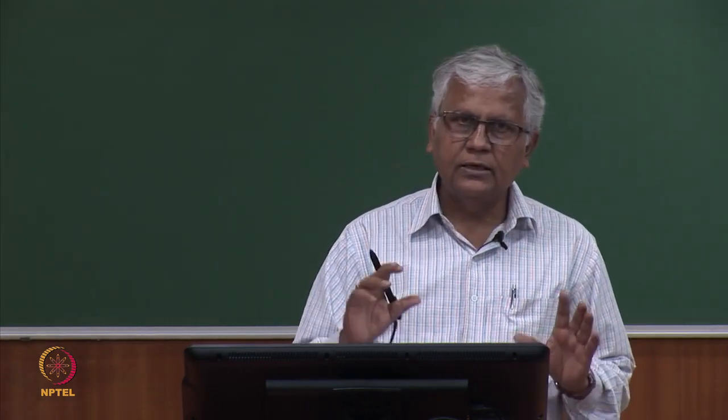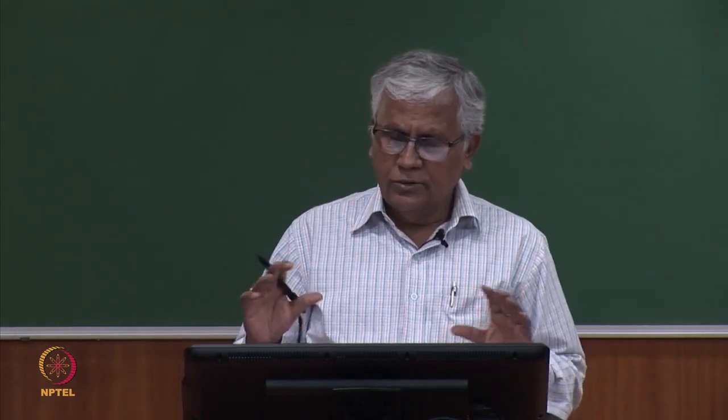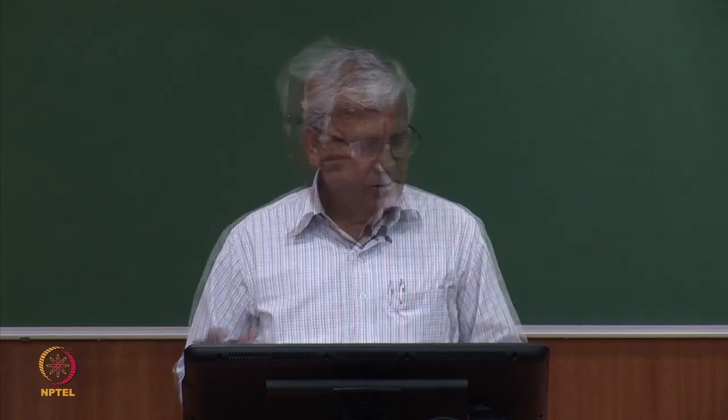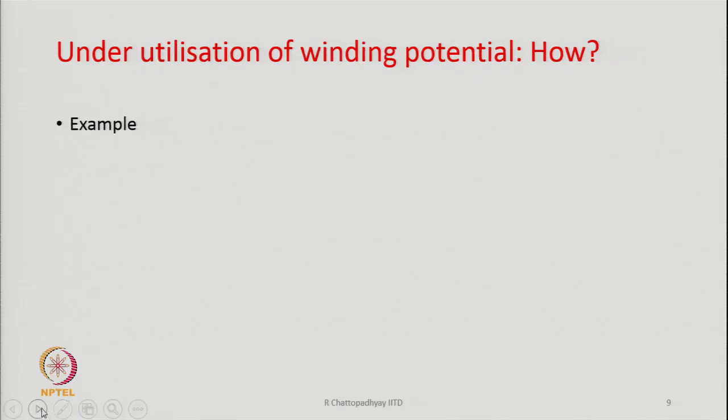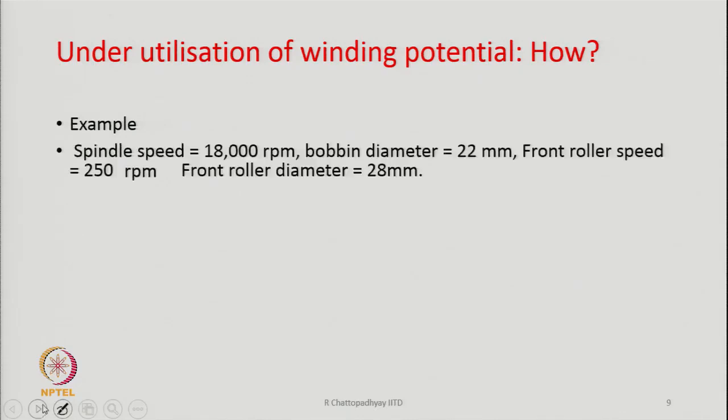So these are the problems with ring spinning technology, and there is always a thinking in the mind of the researchers about how to enhance the production speed. Ultimately it was found that there are some inherent flaws in the very principle of ring spinning. We will see that — as it was written in the previous slide — underutilization of winding potential. Let me explain it now.